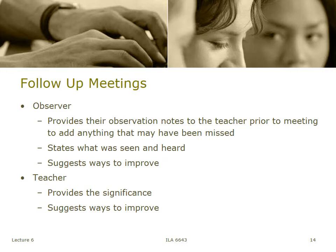In the follow-up meetings, there are two roles. The role of the observer is to provide the items that were seen and heard, give notes to the teacher prior to the meeting, and ask the teacher to add anything that was missing — giving the teacher a chance to say, 'But you didn't catch this.' Then you become partners in this. It's not about me coming in and judging you; it's about saying, 'This is what I saw — here's my evidence. Let's make sure I got all the evidence I was supposed to get.' Then the teacher takes over and provides the significance to what went on.